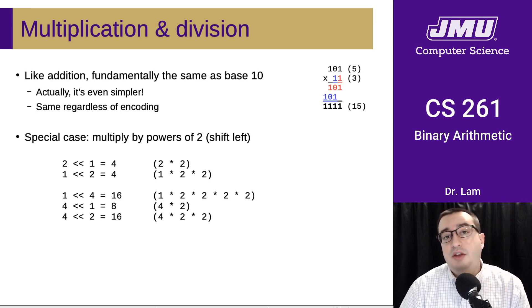This is the same as it is in base 10. If you're multiplying by 10, you just add a zero on the right. That's essentially the same thing in base two.